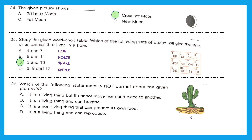Question 26: which of the following statements is not correct about the given picture X? The picture shows a cactus plant. Option A: it is a living thing but cannot move from one place to another — correct statement. Option B: it is a living thing and can breathe — also correct. Option C: it is a non-living thing that cannot prepare its own food — this is wrong because all plants are living things. So option C is the right answer.